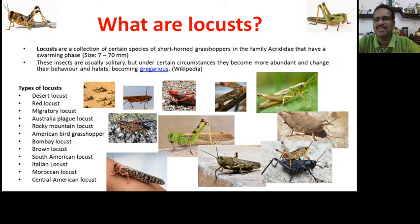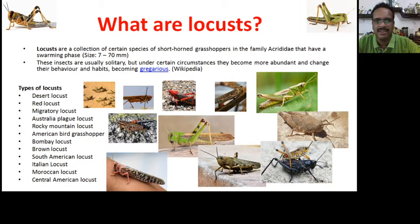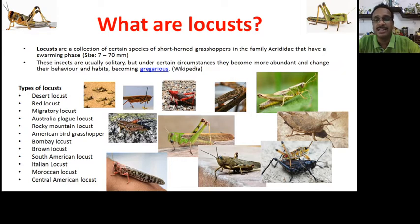Locusts are a collection of certain species of short grasshoppers in the family Acrididae that have a swarming phase — meaning they move in groups. Their size can range from seven millimeters to seventy millimeters or seven centimeters. These insects are usually solitary; they feed alone, but under certain circumstances they become more abundant.